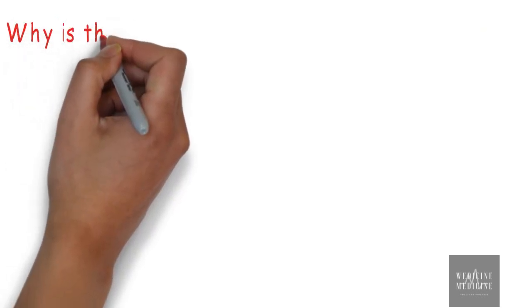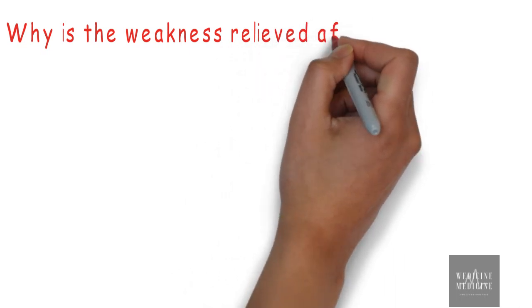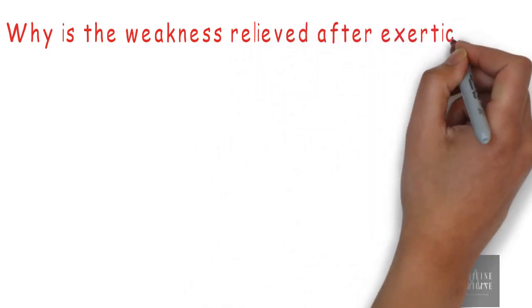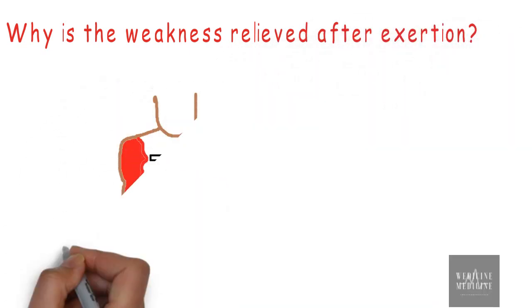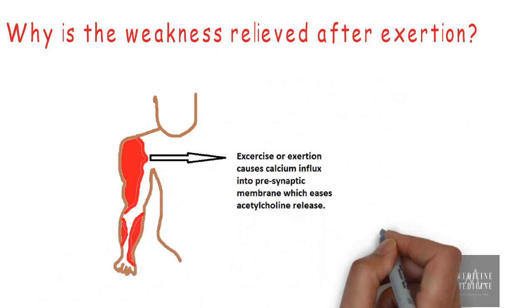One thing particular about this syndrome is that muscle weakness is relieved after exertion or exercise. Why is it so? Exercise or exertion causes action potential to generate calcium influx into presynaptic membrane, which eases acetylcholine release and thereby relieves the symptoms of weakness.